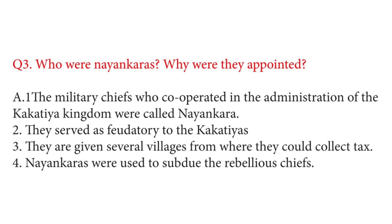Question No. 3: Who were Nayankaras and why were they appointed? Answer. The military chiefs who cooperated in the administration of the Kakathiya kingdom were called Nayankaras. They served as fiduciaries to the Kakathiyas. They were given several villages from where they could collect tax. Nayankaras were used to subdue the rebellious chiefs.